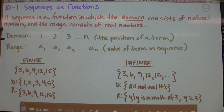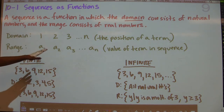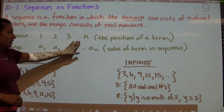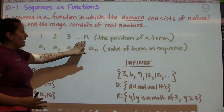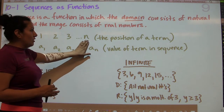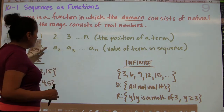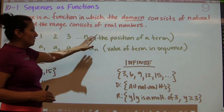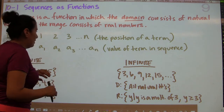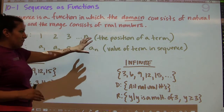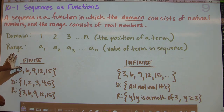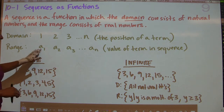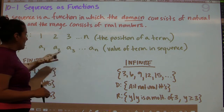For the domain, you would have values like 1, 2, 3, dot dot dot — obviously referring to the fact that it's going to continue forever — so then we get to the nth value, where this number represents the position of a term. The range would be a-sub-1, a-sub-2, a-sub-3.